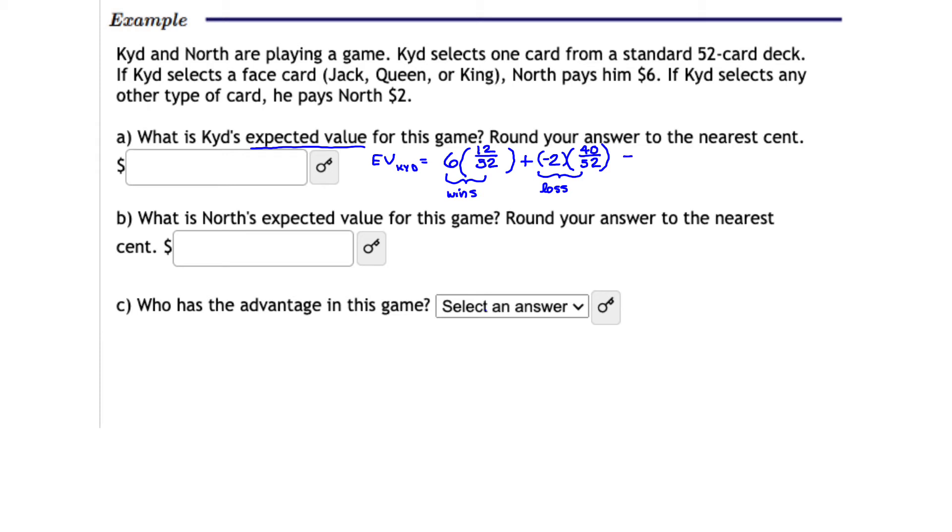Alright, so let's put these numbers together. I'm going to do a little bit of cancellations first to make it a little easier in terms of math. I'm going to first of all reduce 12 over 52. Notice 12 over 52 is reducible by 4. So 4 goes into 12 3 times and 4 goes into 52 13 times. Similarly, 40 over 52 is also reducible because 4 goes into 40 10 times and 4 goes into 52 13 times. Alright, my numbers are a little smaller there. So now I can multiply straight across. 6 times 3 is 18 over 13. And then I have plus and then negative 2 times 10 is negative 20 over 13. So I'm adding 18 over 13 and negative 20 over 13, which is going to give me negative 2 over 13.